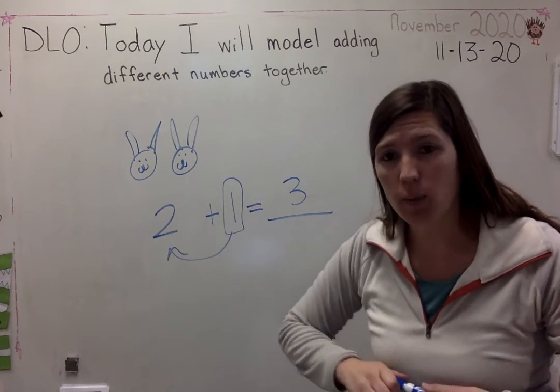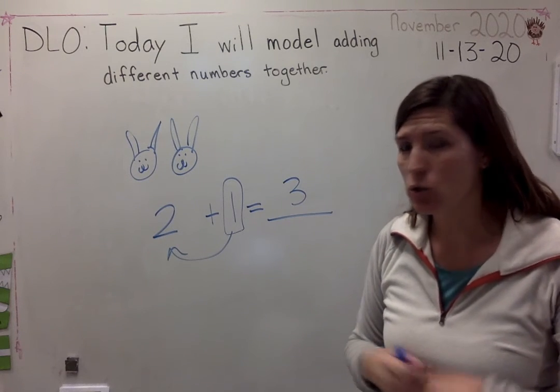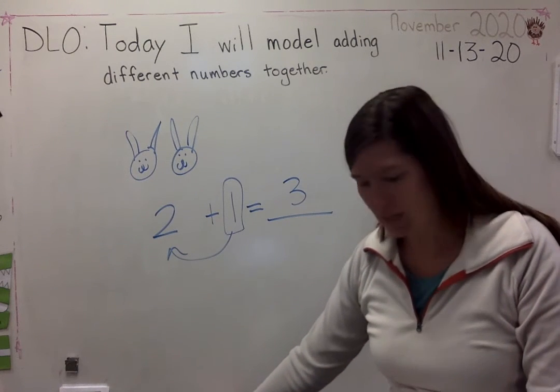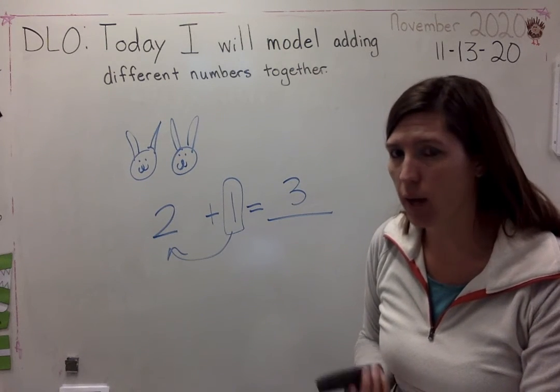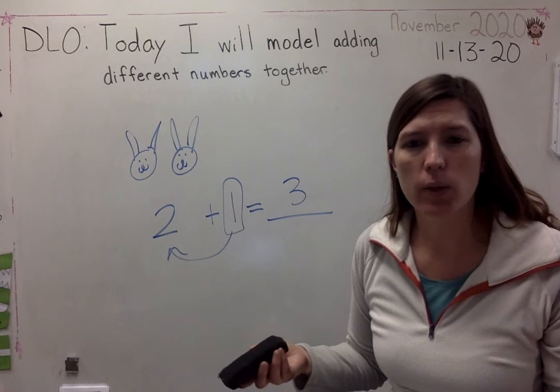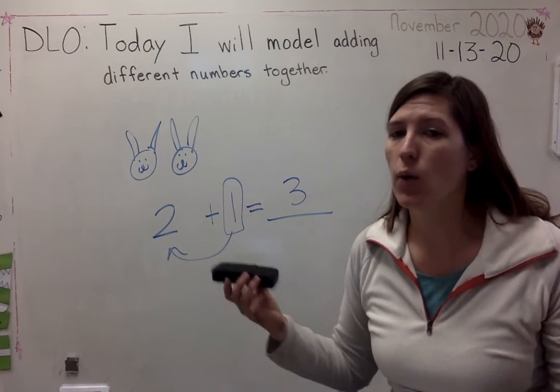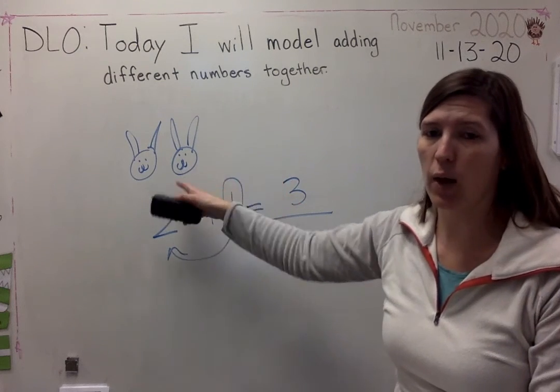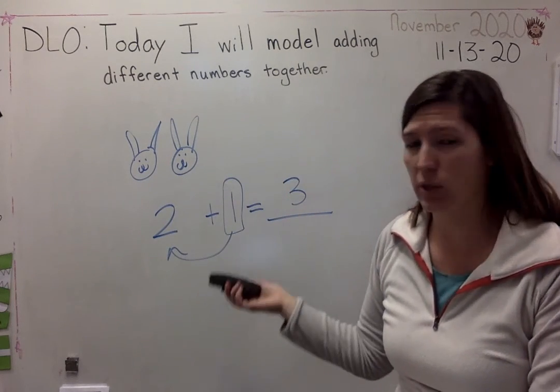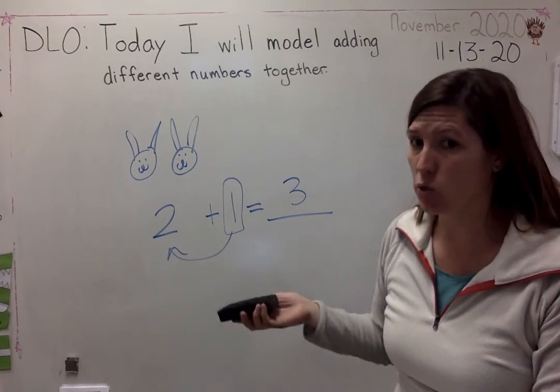So when you talk about that, explain that to whoever is helping you. Is Emily correct? Is the answer a total of three rabbits? Why or why not? How do you know if Emily's correct or incorrect? What evidence can you show? How did you model it to show that either Emily's right or Emily is wrong?